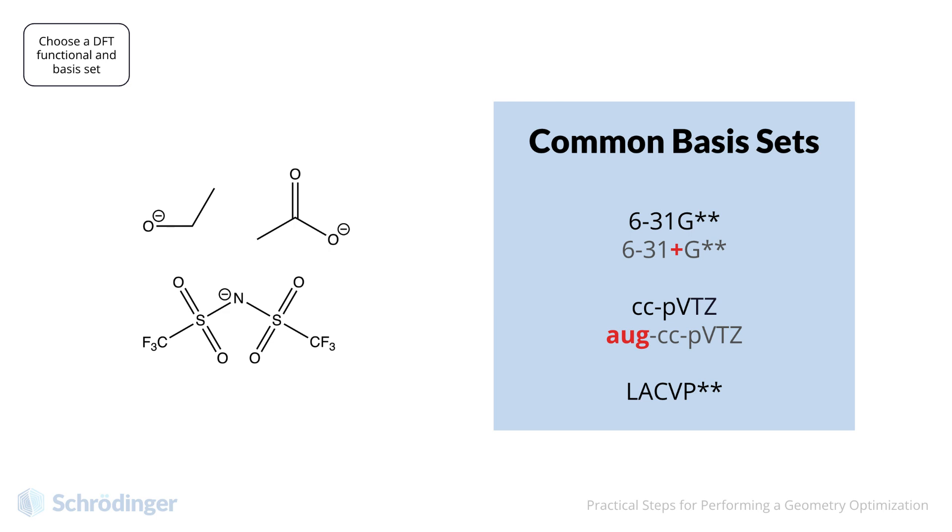If we were to recommend some commonly used basis sets, they would be the ones that we have shown here. 6-31G** is a general-purpose basis set for geometry optimizations. cc-pVTZ is a more expensive basis set, adequate for accurate energy calculations. For anions and non-covalent interactions, use diffuse variants of these basis sets. For a universal basis set that supports both light and heavy elements, we use a flavor of the 6-31G family, namely the LACVP family of basis sets. For example, LACVP** is essentially equivalent to 6-31G** for light elements, but it also supports heavy elements.